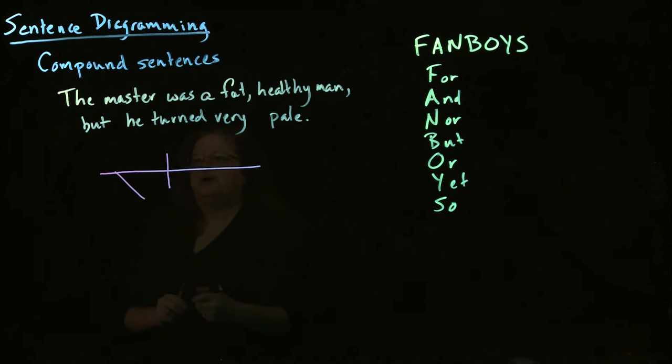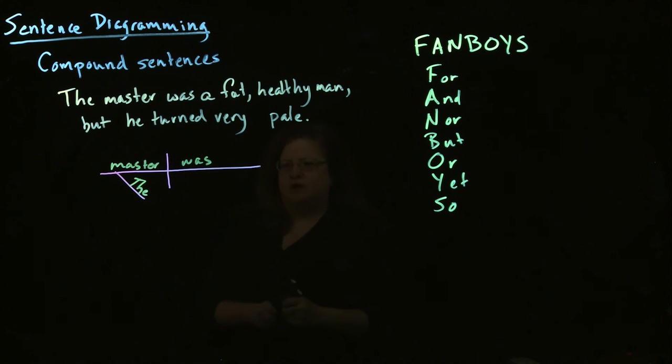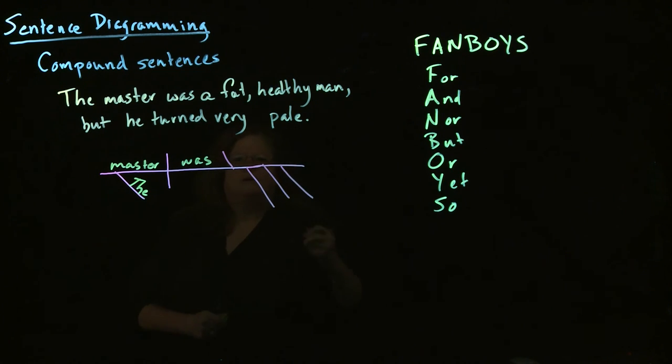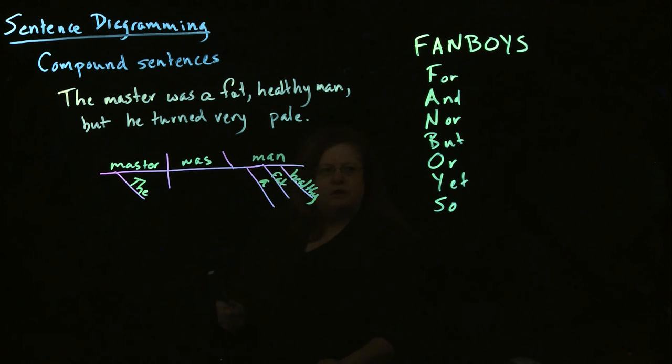So we start with the master was, and then we have a subject complement, a fat, healthy man. So that's our first sentence that we're connecting. Now we have another sentence that we've connected to it. So once again, we'll draw our basic framework and fit our subjects and verbs in, or subject and verb in this case.